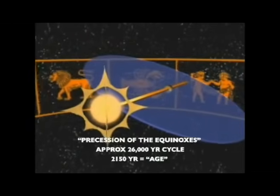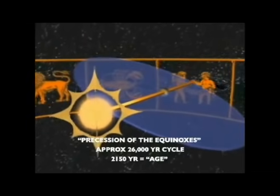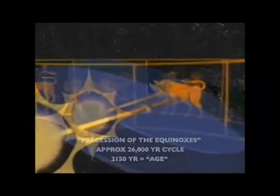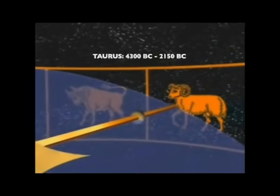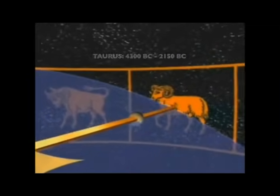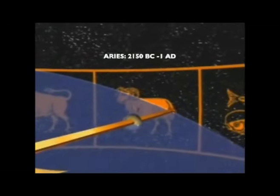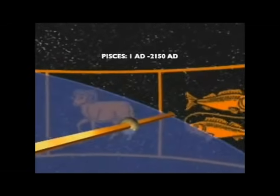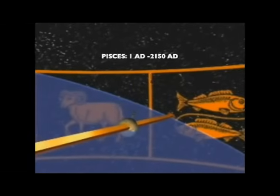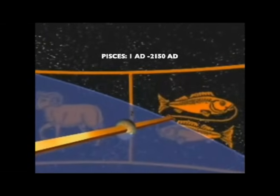From 4300 BC to 2150 BC, it was the age of Taurus, the bull. From 2150 BC to 1 AD, it was the age of Aries, the ram. And from 1 AD to 2150 AD, it is the age of Pisces — the age we are still in to this day. And in and around 2150, we will enter the new age, the age of Aquarius.